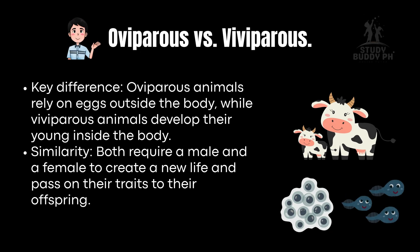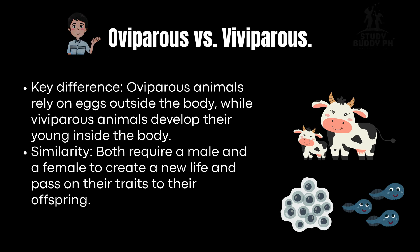Key difference: oviparous animals rely on eggs outside the body, while viviparous animals develop their young inside the body. Similarity: both require a male and a female to create a new life and pass on their traits to their offspring.